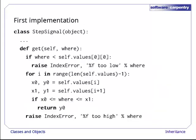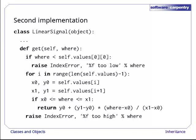Here's the implementation of StepSignal's get method again. It searches through the xy pairs, saved in self.values, to find the sample immediately preceding where, and returns the corresponding y value. If where lies outside the sampling range, get raises an index error exception instead of returning a value. The implementation in LinearSignal is almost identical. In fact, only the line that actually does the interpolation is different. Everything else is identical, and as we've said before, code that's duplicated will eventually be wrong.